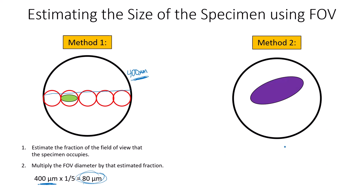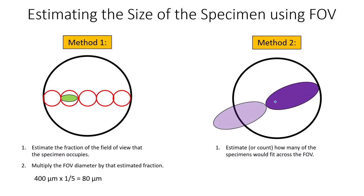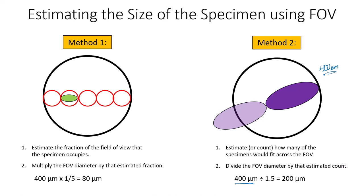Method two is similar, but instead of estimating a fraction, we count how many physical specimens would fit across the field of view. In this case, one and a half of these particular cells fit across the field of view, so we divide the field of view diameter by that estimated count. 400 micrometers divided by one and a half gives us roughly 200 micrometers for the length of that particular object.